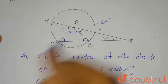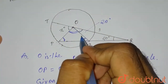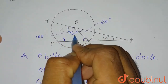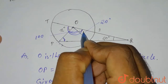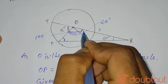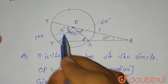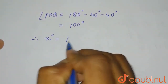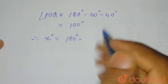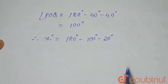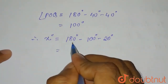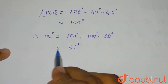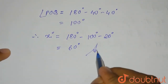In the diagram, this angle is 20 degrees, and we have now proved angle POQ is 100 degrees. The total angle is 180 degrees, so x equals 180 minus 100 minus 20, which equals 60 degrees. Therefore the value of x is 60 degrees. This is the complete solution to this question.